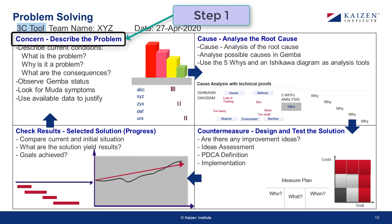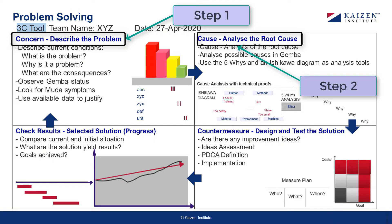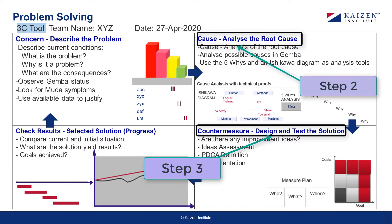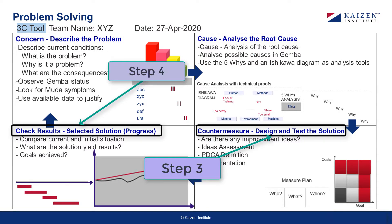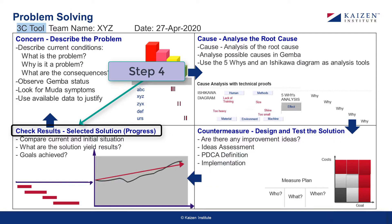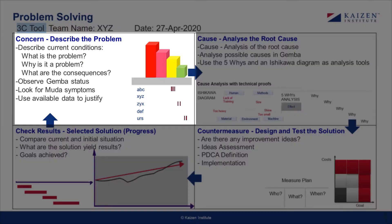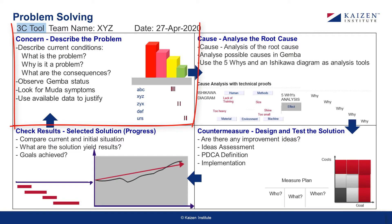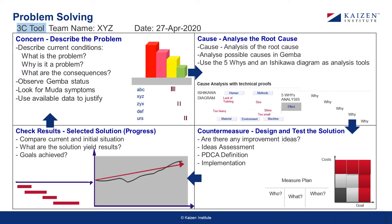The four steps are: describe the problem or concern, analyze root causes or cause, design and test solution or countermeasure, and check results. Start by listing the concern or the problem, which may relate directly to the current issue or any ongoing issue at your workplace. The concern column describes the problem and answers the questions: What is the problem? Why is the problem arising? What are the consequences of the problem?